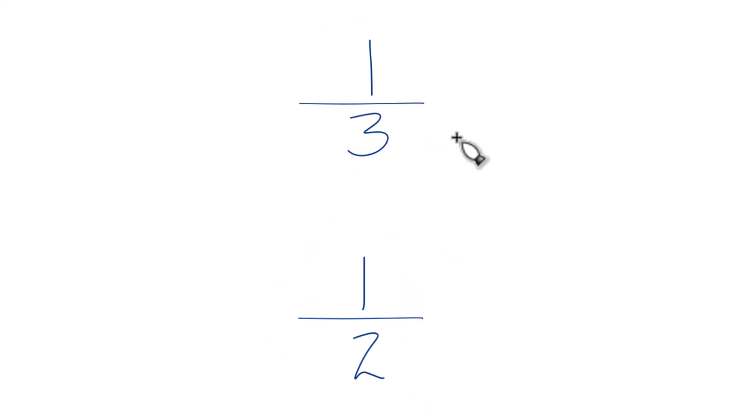You could just, on a calculator, divide one by three and then divide one by two and then compare the decimals. That would tell you which is bigger, one-third or one-half.